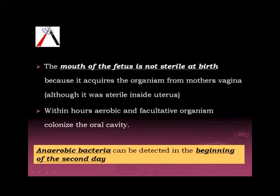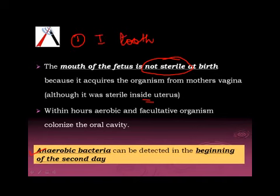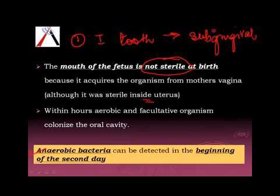First thing we'll be talking about is the mouth of the fetus. It is not sterile at birth because it acquires organisms from the mother's vagina when it passes through the birth canal, although the mouth was sterile when the fetus was inside the uterus. Within hours of birth, aerobic and facultative organisms colonize the oral cavity, and anaerobic organisms colonize the oral cavity as early as the second day.